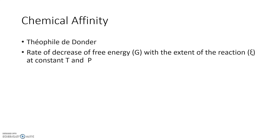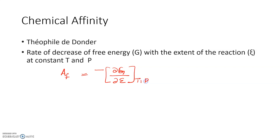Chemical affinity is a term which was introduced by Theophil De Donder, and he defined chemical affinity as the rate of decrease of free energy G with the extent of the reaction epsilon at constant temperature and pressure. It is denoted by AF, and it is equal to minus ∂G/∂ε at constant temperature and pressure, which is equal to minus ΔG.